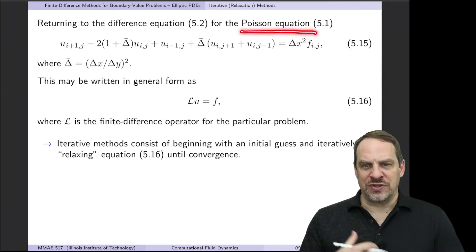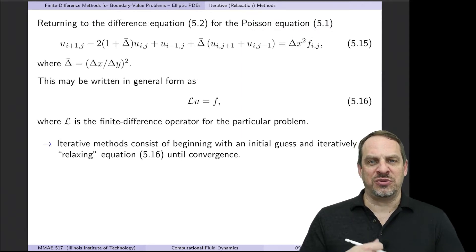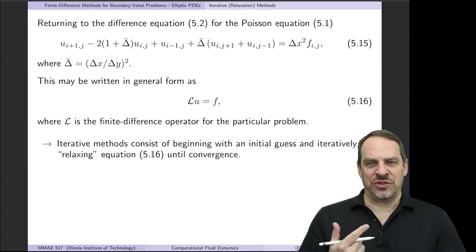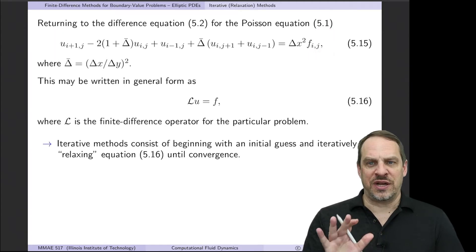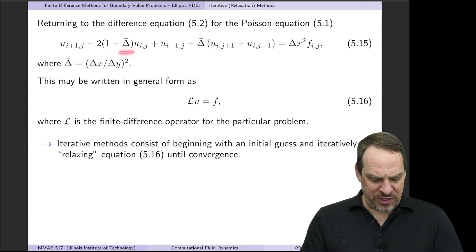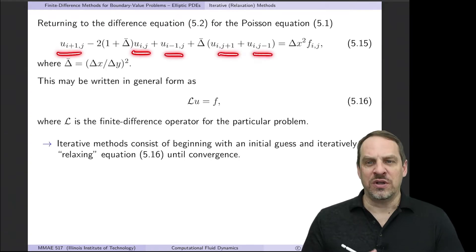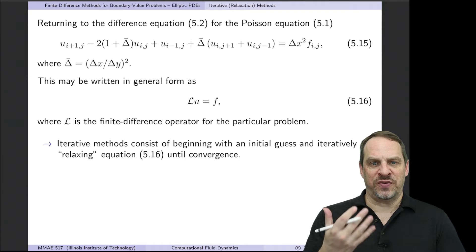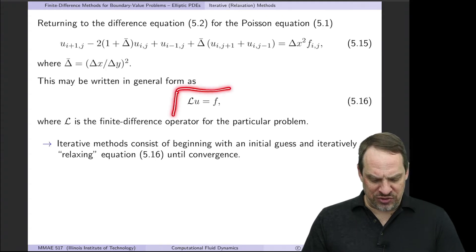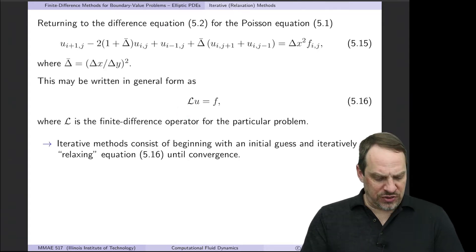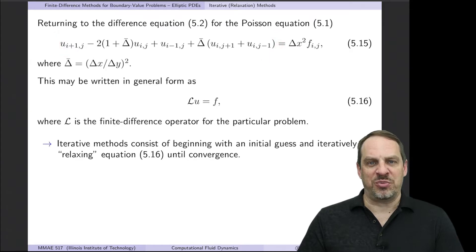We come back to our Poisson equation exactly as before: ∂²u/∂x² + ∂²u/∂y² equals some known function f(x,y). We use second-order accurate central difference approximations for the second derivatives and end up with our finite difference equation as before. The delta-bar is the square of Δx over Δy. We have 5 unknowns on the left-hand side corresponding to our 5-point finite difference stencil, and all the knowns are on the right-hand side. Sometimes we use the more general notation: L operating on u equals f, where the script L is our finite difference operator.